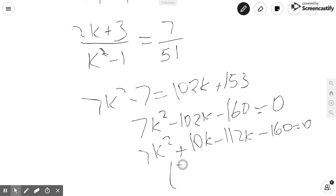So we do 7k squared plus 10k minus 112k minus 160 equals 0. And from here, we can factor out and get 7k plus 10 times k minus 16 equals 0.